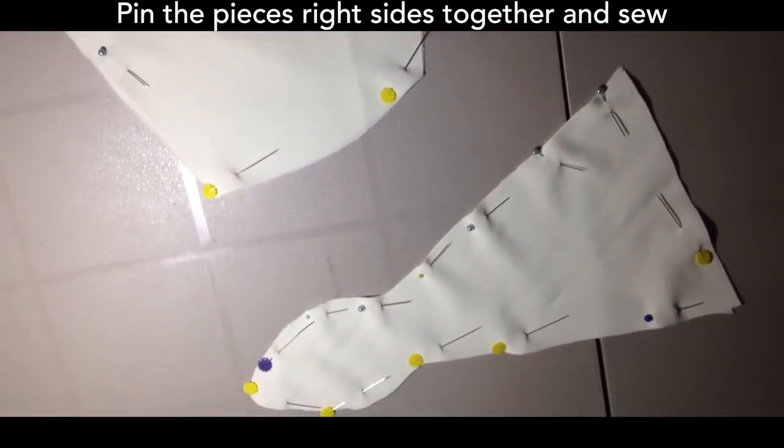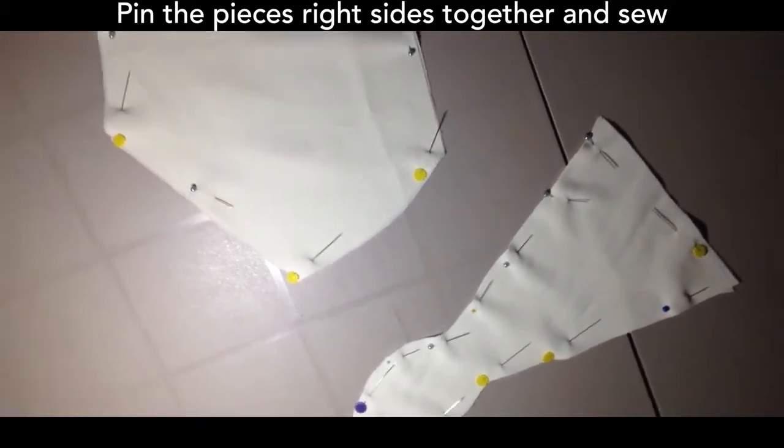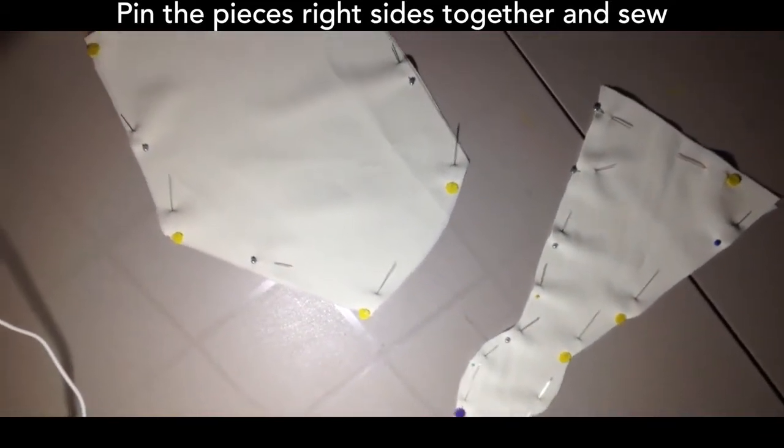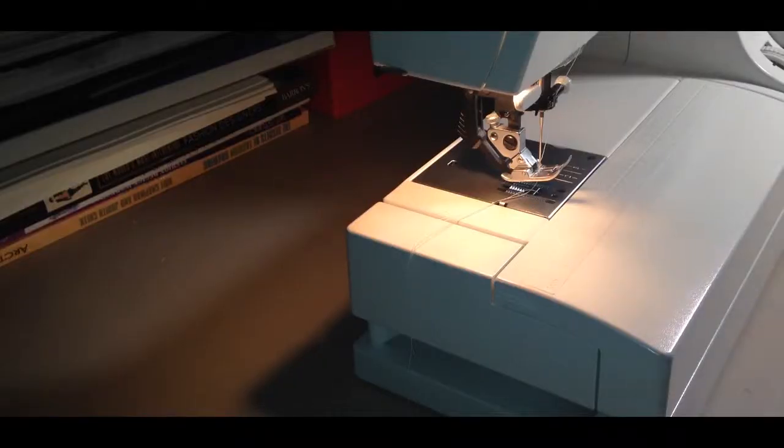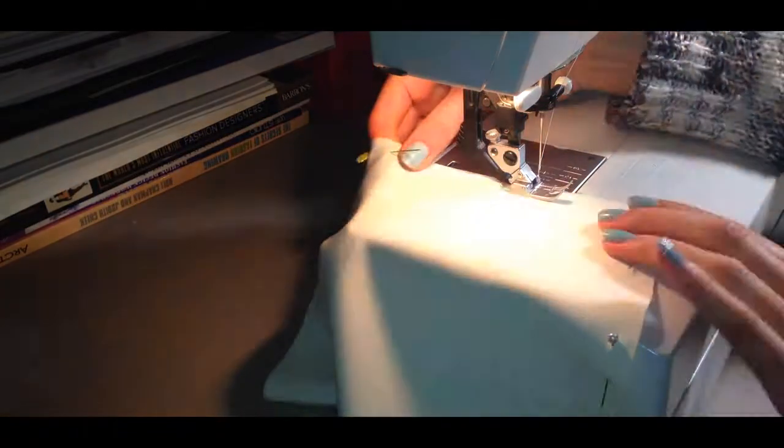So now I'm just matching them right sides together and then sewing along, leaving an opening at the side seam so I can turn it inside out.